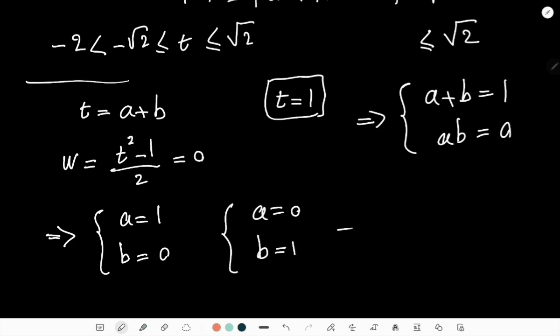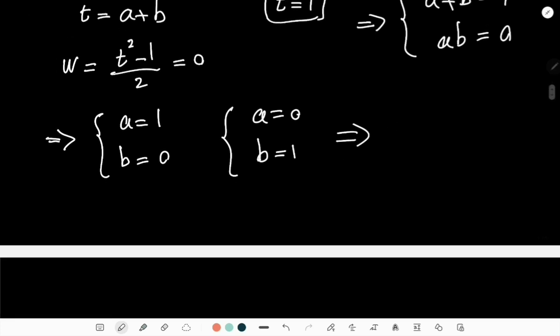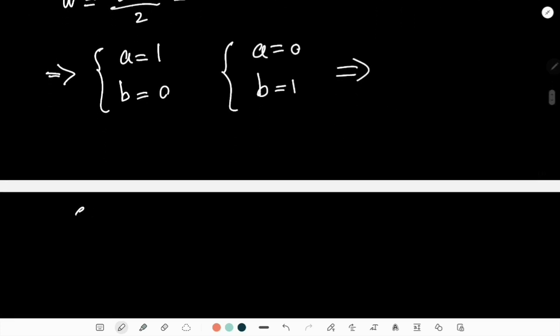But that is nothing but the following systems of equations. So either we have sin(x) = 1 and cos(x) = 0, or we have sin(x) = 0 and cos(x) = 1.